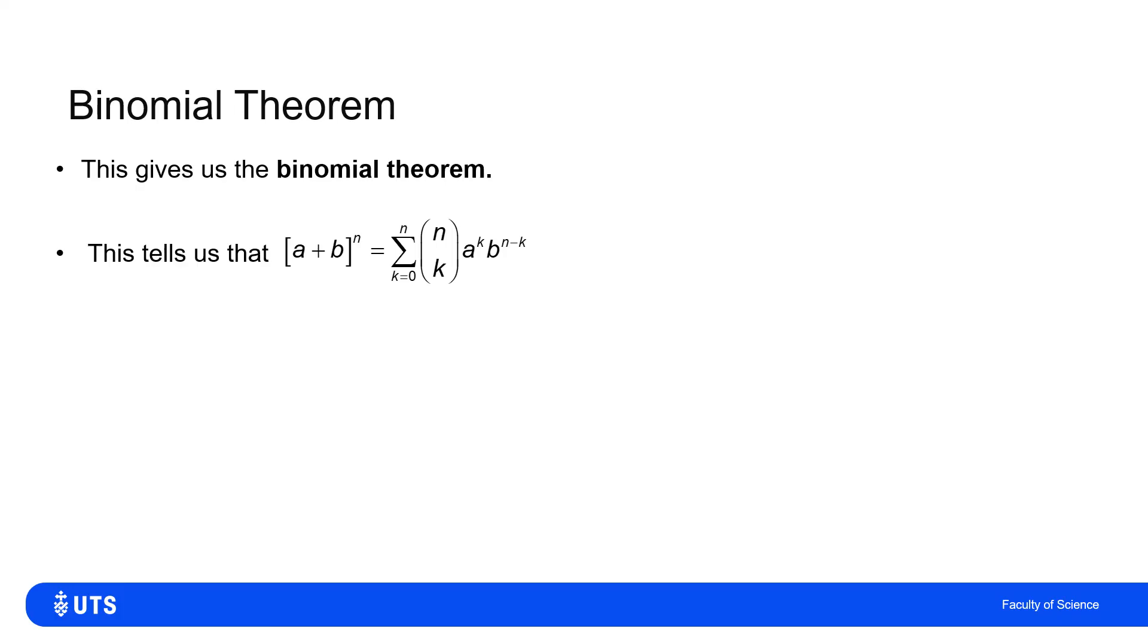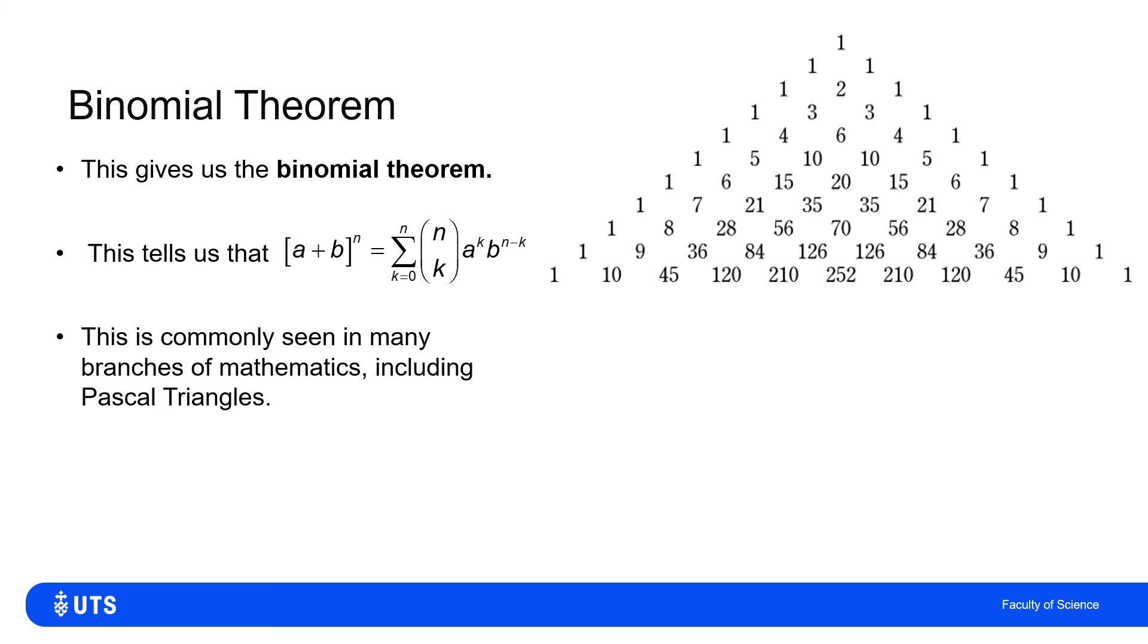And that is because that one, three, three, one that I just said was because three choose zero is one, three choose one is three, three choose two is three, and three choose three is one. And this leads to this, if I write out the binomial coefficients, you may have seen this on the wall of maybe a high school maths class. If I look across each row, I've got one,